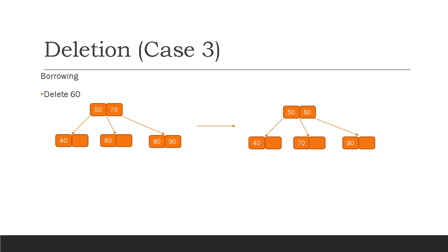The third and final case for deletion is when we have to do borrowing. For instance, in the left tree we want to delete 60. Since 60 is between 50 and 70, it must be in the middle subtree. We find and delete it, but the node will be vacant. What we do is borrow values from its sibling, either left or right. In this instance, we borrow from the right. We pull the parent value down in place of 60, and move the borrowed sibling value up as the new parent. Here, 70 was pulled down to replace 60, and 80 was moved up.